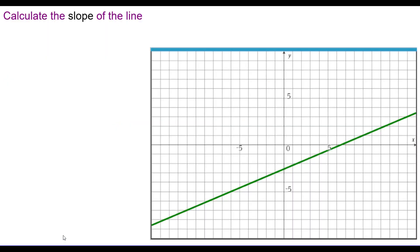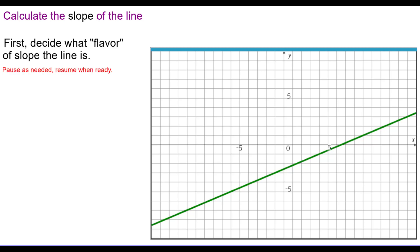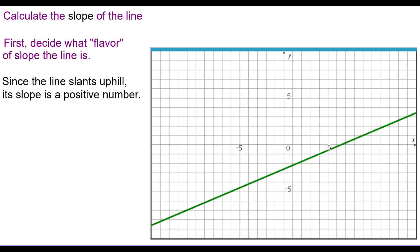So back to our example — let's calculate the slope of this line. First, we need to decide what flavor of slope the line is: positive, negative, zero, or undefined. Since this line slants uphill from left to right, its slope is a positive number.